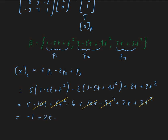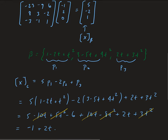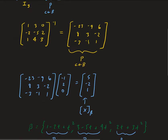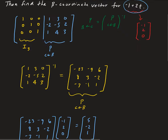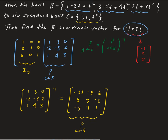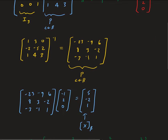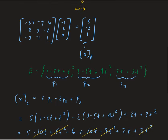So we get negative 1 plus 2t, which is exactly the polynomial in terms of the standard basis that we had. It's a good way to check your work.